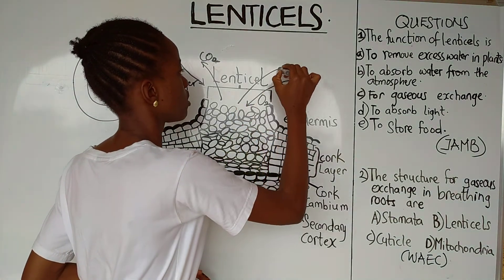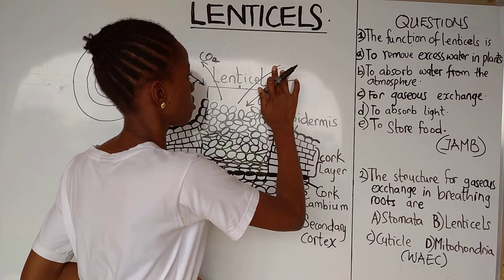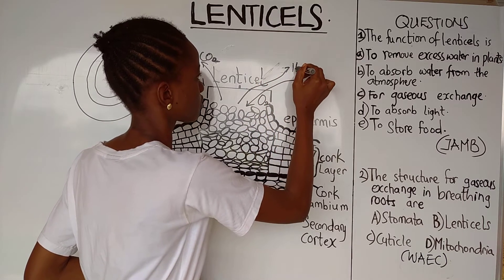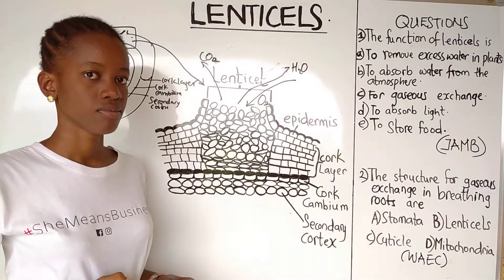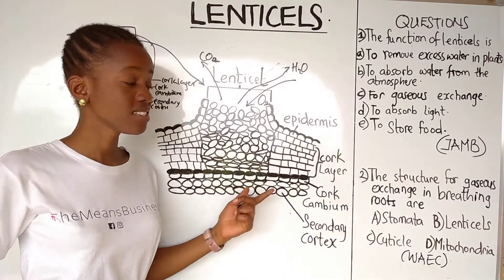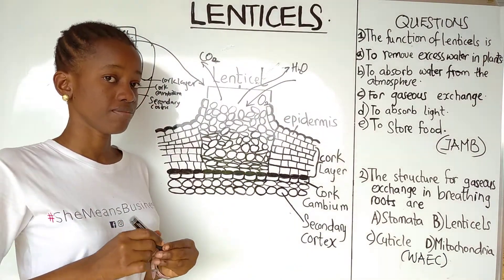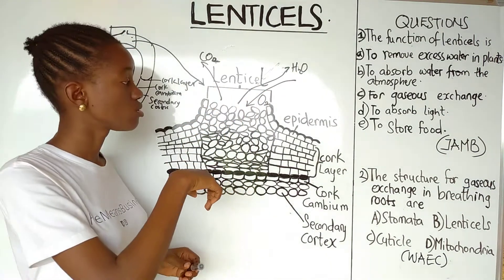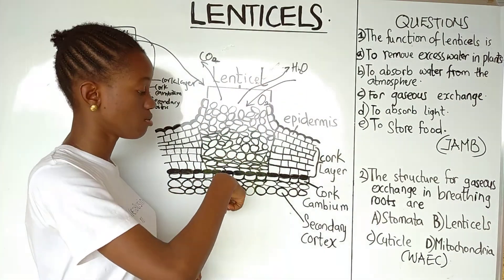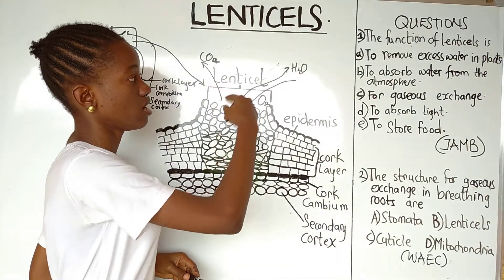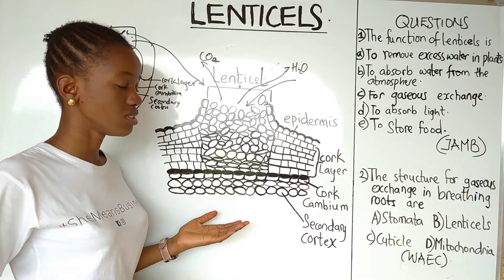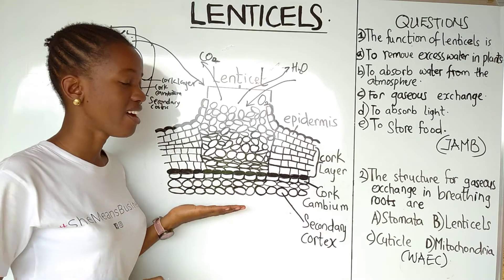So H₂O is one of the gases that comes out through lenticels. In summary, in lenticels: oxygen comes in, CO₂ goes out, and water vapor also goes out. Those are the gases exchanged in lenticels.